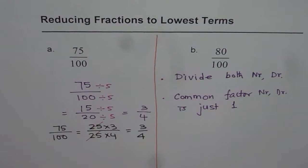So, what we can say is 75 over 100 is 3 over 4 and we, in the process, learned two methods of reducing fractions to lowest terms.